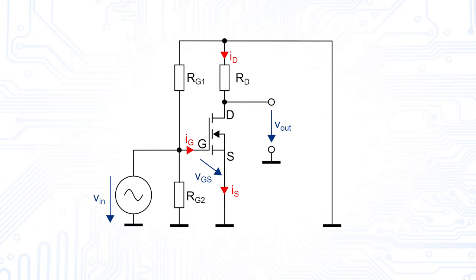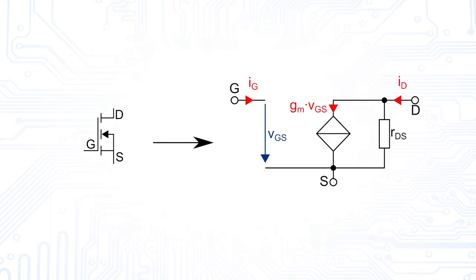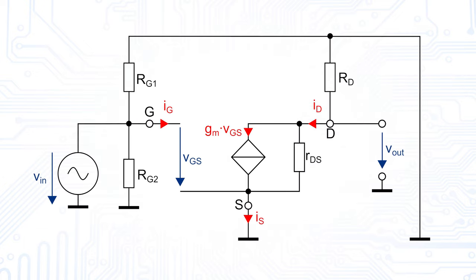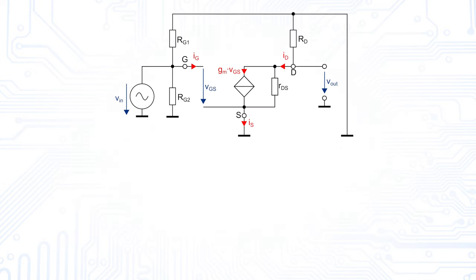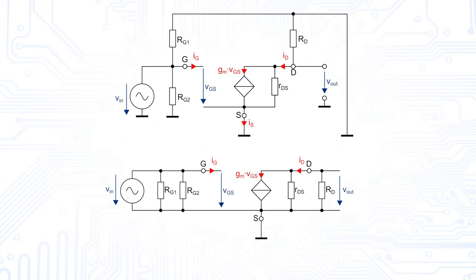As a next step, we replace the MOSFET by its small signal equivalent circuit. Actually, now we are already finished with our small signal equivalent circuit, but we redraw it a little bit to make it clearer for the calculation.